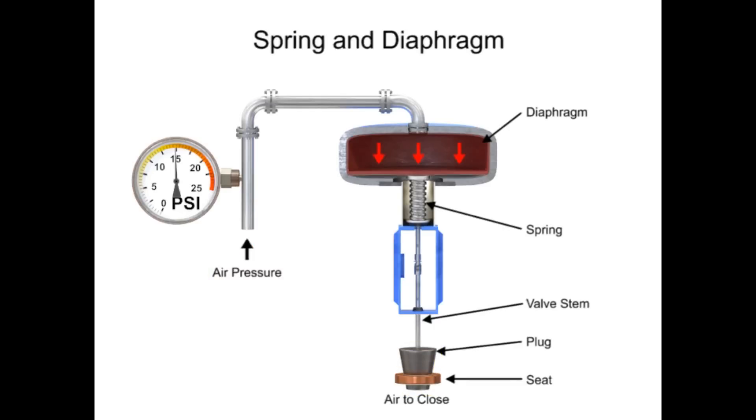With no air pressure, the restrictor is pushed upward by the spring to act as a normally open control valve.